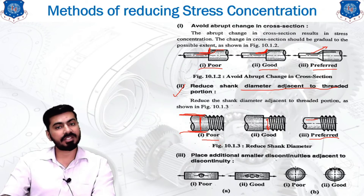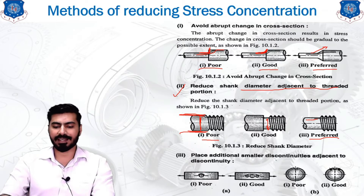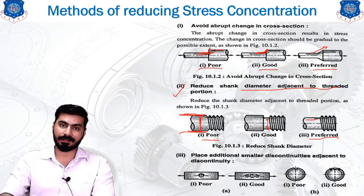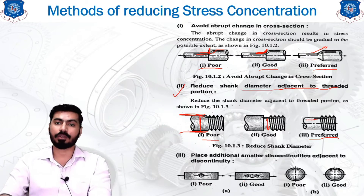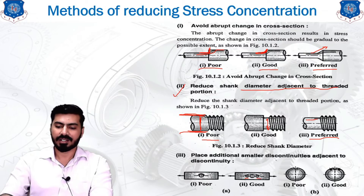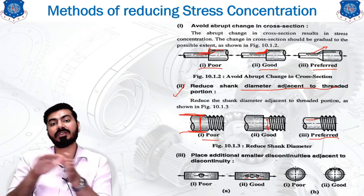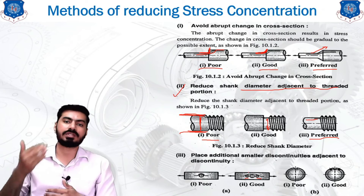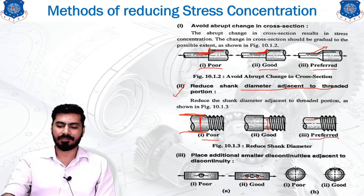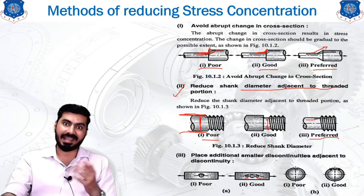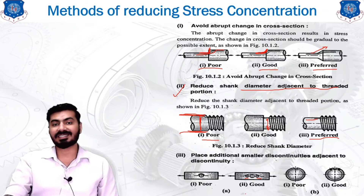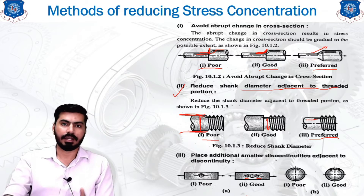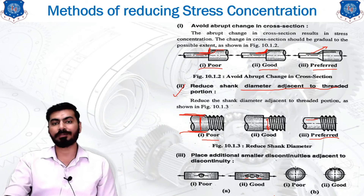The third method applies to components with a hole in the middle of the body. Because the hole reduces the cross-sectional area, we can apply multiple smaller holes adjacent to the main hole. This causes the reduction in cross-sectional area to decrease gradually rather than abruptly, reducing stress concentration. However, drilling holes into the body reduces its overall strength, so this method is not recommended for every material.